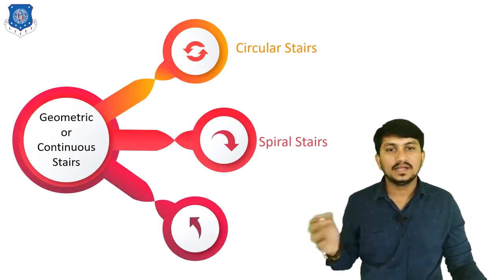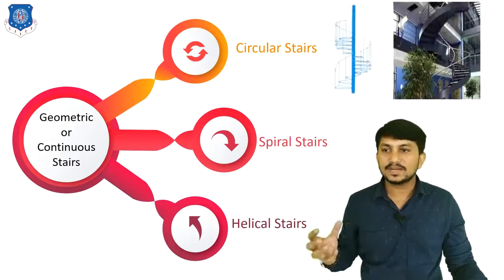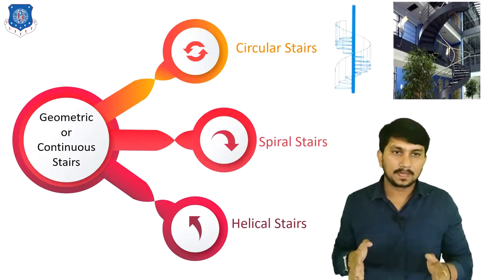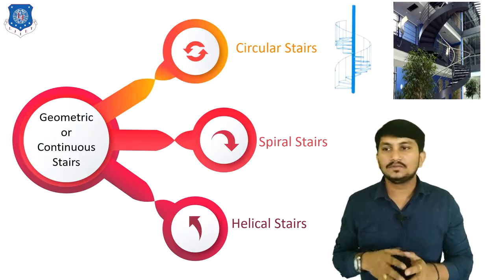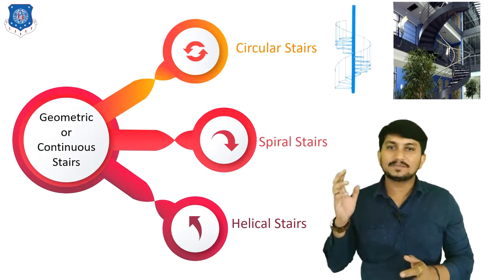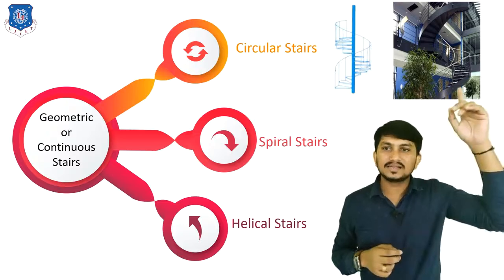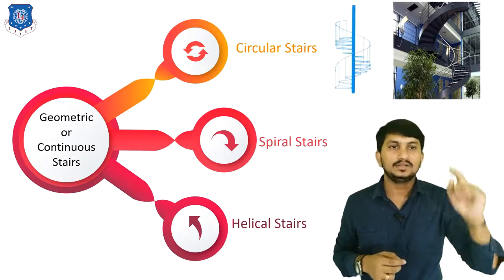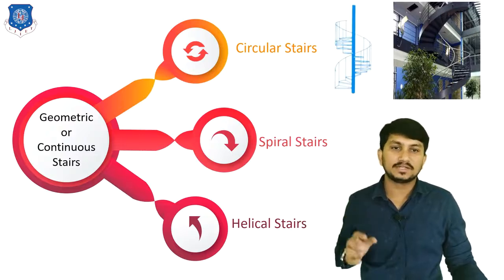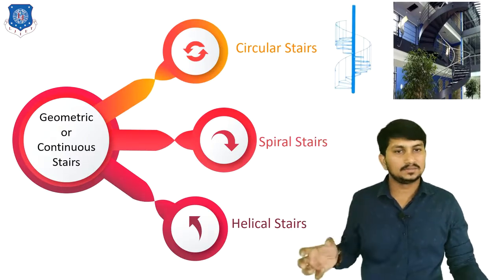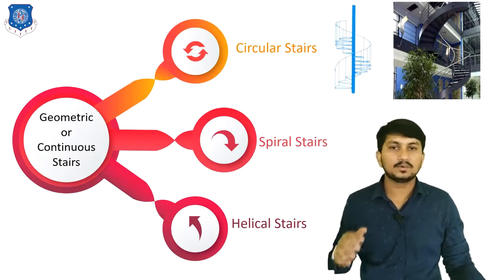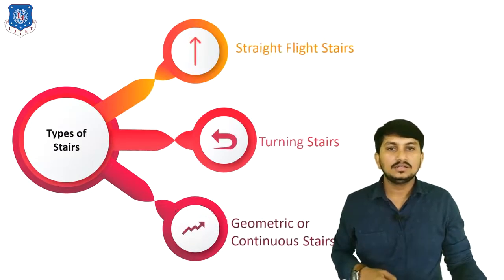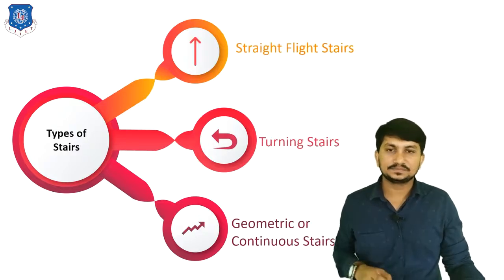Next is helical type of stairs. The shape of helical and spiral stairs is somewhere similar, but the main difference in helical stairs is that no support is provided in between — it is self-supporting. In all three stairs — circular, spiral, and helical — there is no landing provided, so they are called continuous type of stairs. This is all about types of stairs.